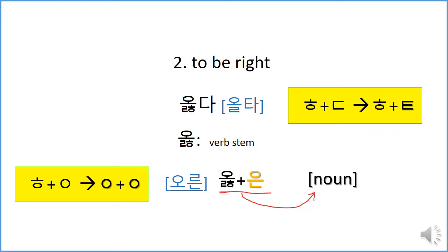Do you remember what we called 'to the right side'? That's right — 오른손. So the sound is the same. Isn't that interesting? In English, 'the right side' and 'to be right' have the same word: right. In Korean, it doesn't look like it because 오른 is spelled differently from 옳다. But when you say it, I think they came from the same word. 오른손, right hand. 오른 something, 오른 사람, 오른 법 — the sound is exactly the same. Isn't that interesting?